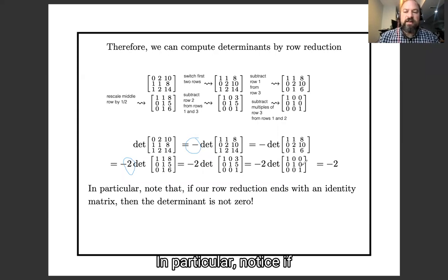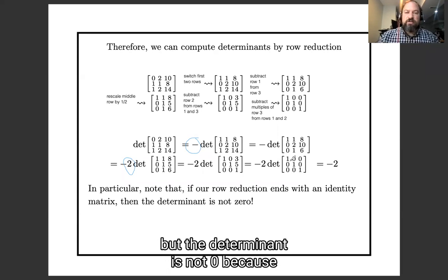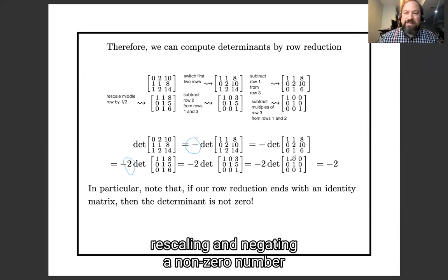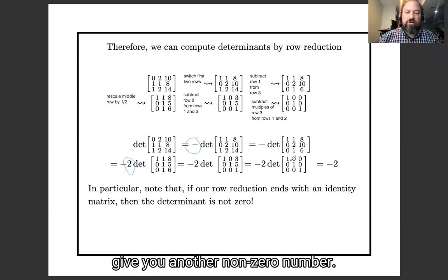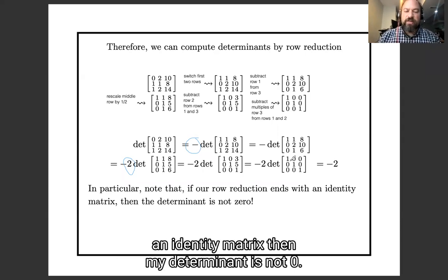In particular, notice, if we got to an identity matrix at the end, that the determinant is not 0. Because rescaling and negating a non-zero number will give you another non-zero number. So if my row reduction ends with an identity matrix, then my determinant is not 0.